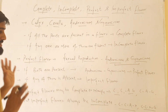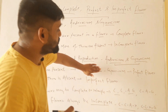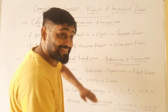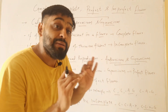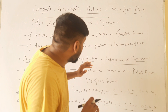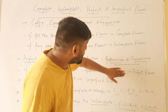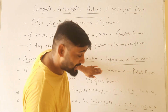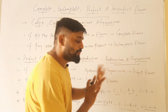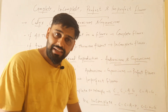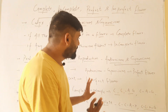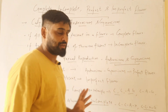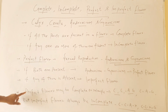But if any one of them is absent — suppose androecium is not there but gynoecium is present — then it will be called an imperfect flower. If gynoecium is there but androecium is not there, if any one of the two is absent, then it will be called an imperfect flower.